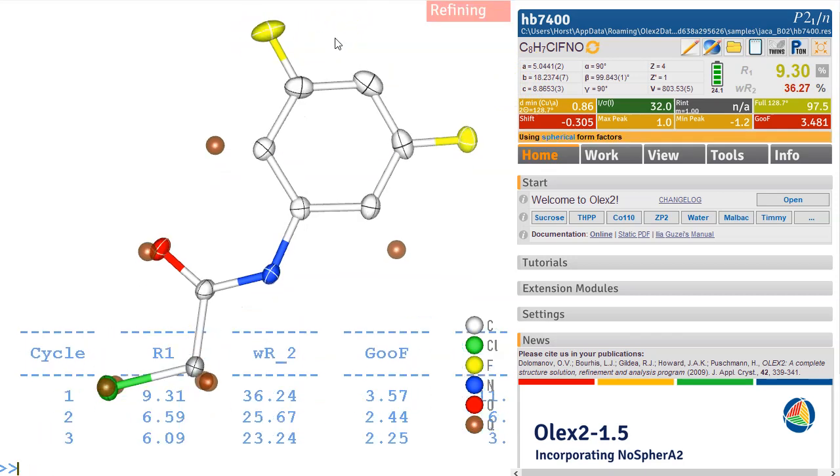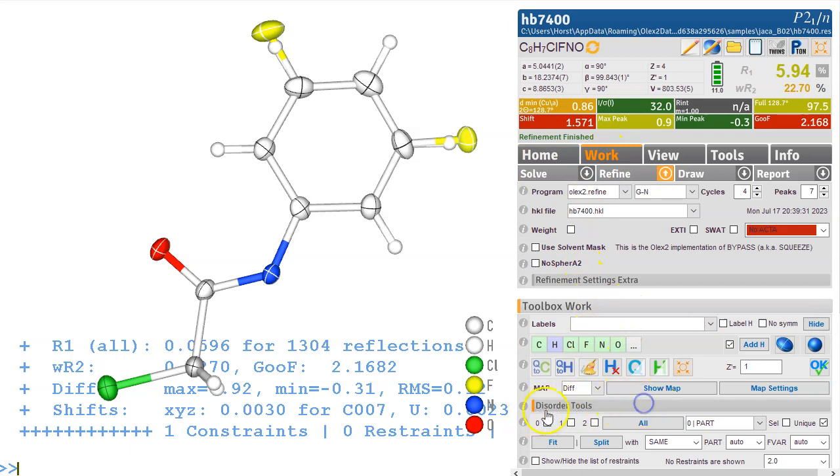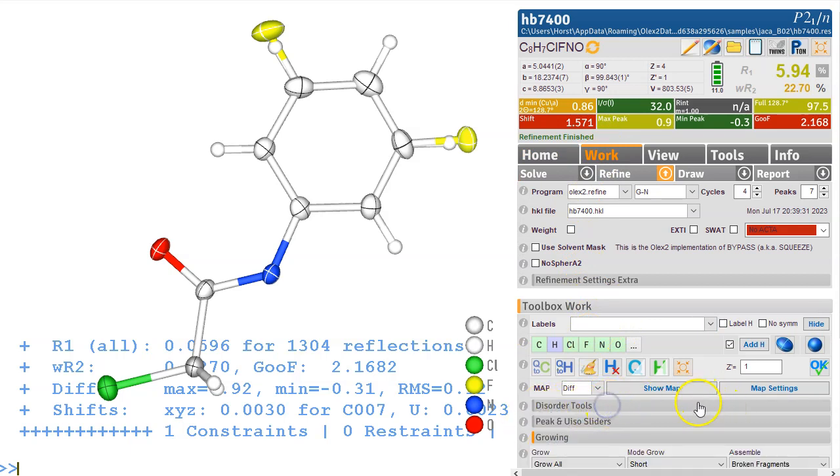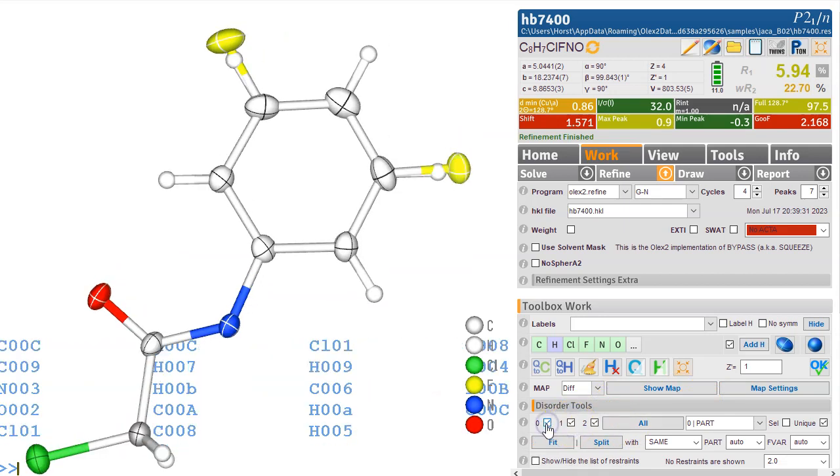Make it anis and refine that again, add the hydrogens and watch this one here, so there is a peak here so that's clearly a hydrogen that needs to be there. If you want to look at this slightly differently we can go to work and then we go to disorder tools which may be short for you so you open that up, and we can look at part 0 and part 1, part 0 and part 2, and look at all the parts here.